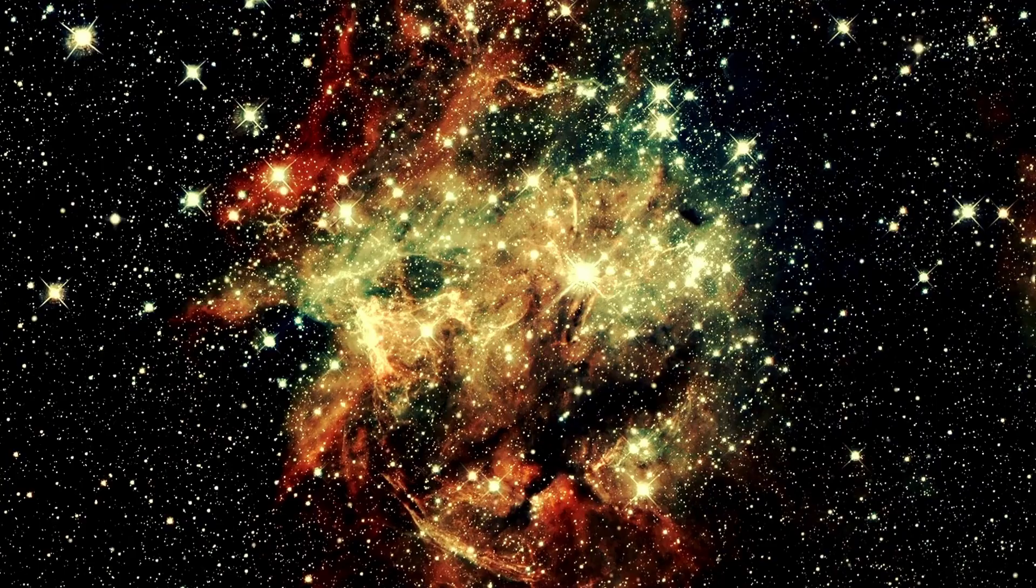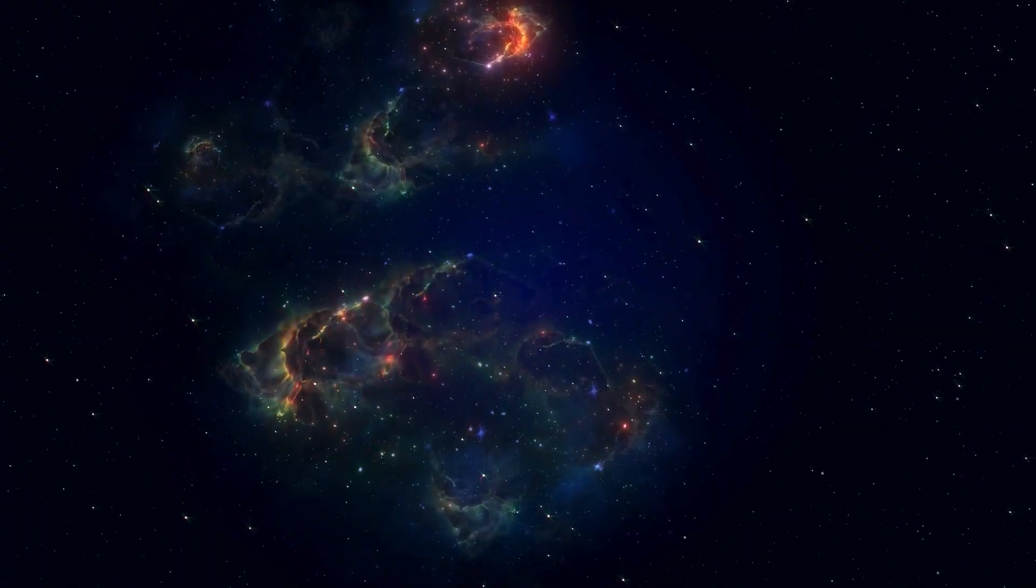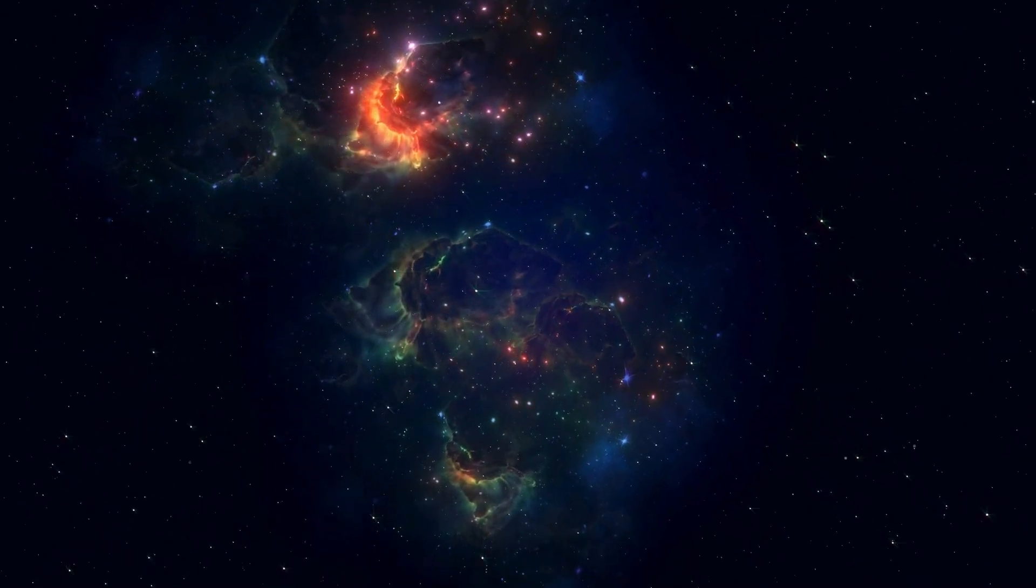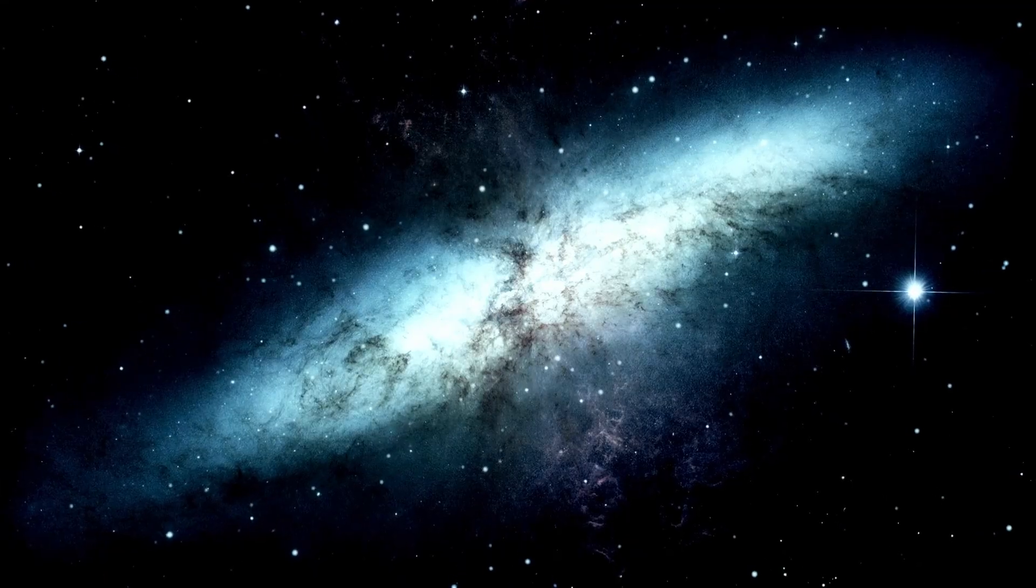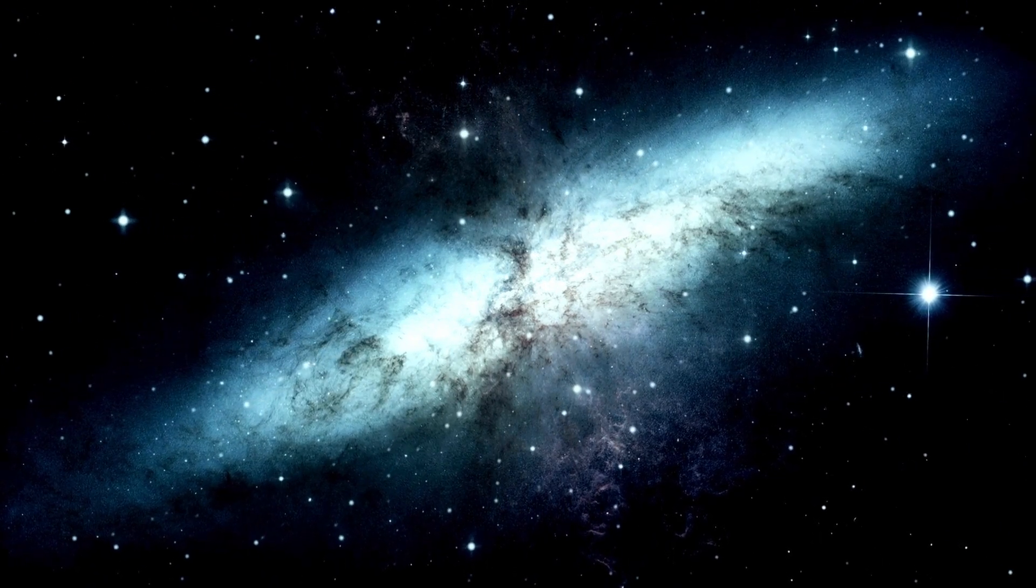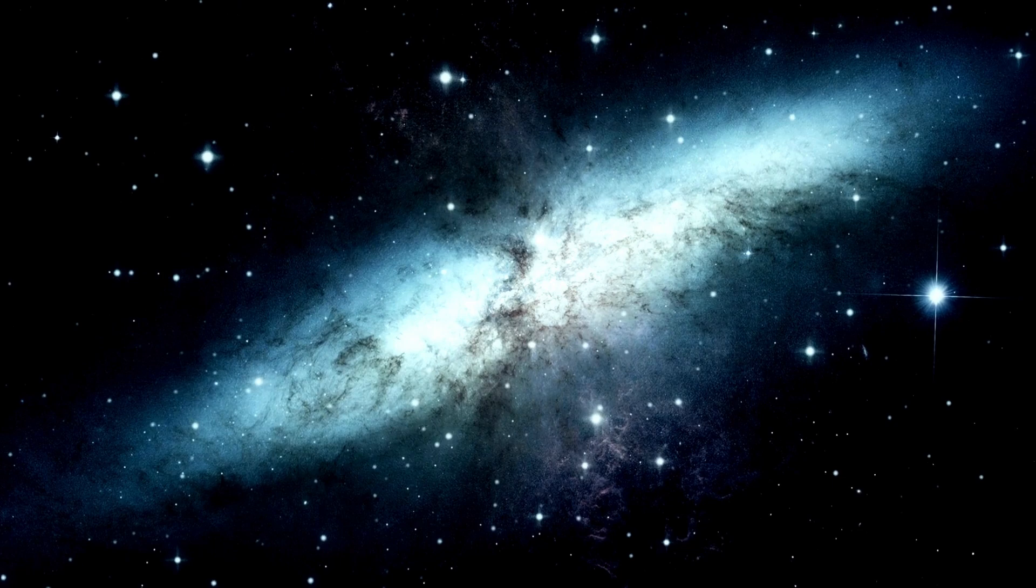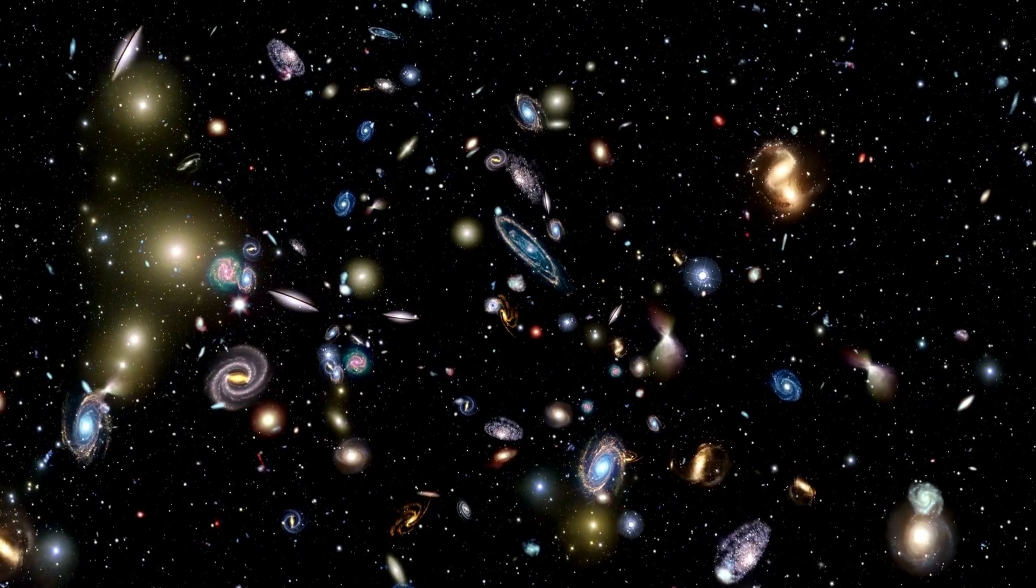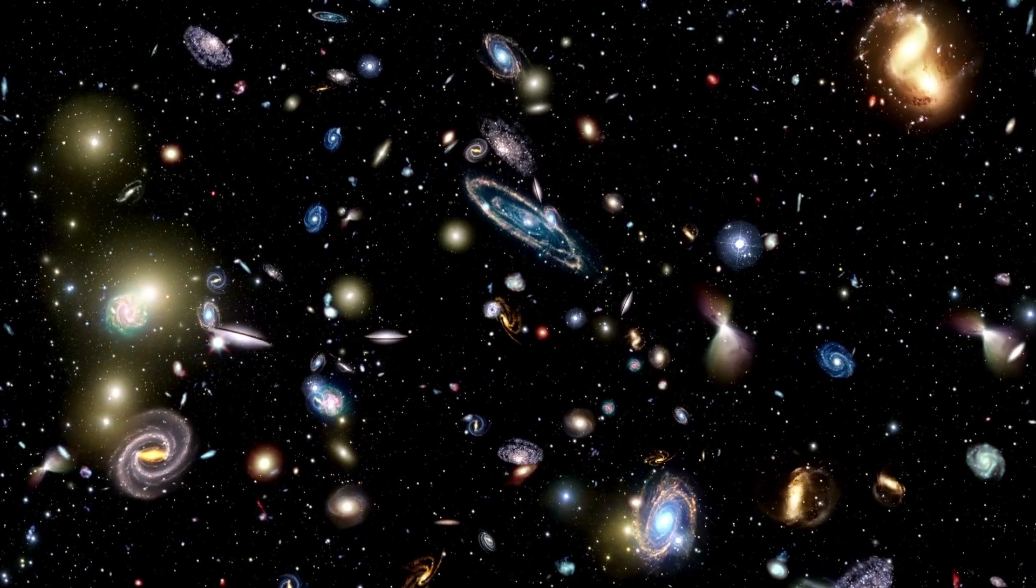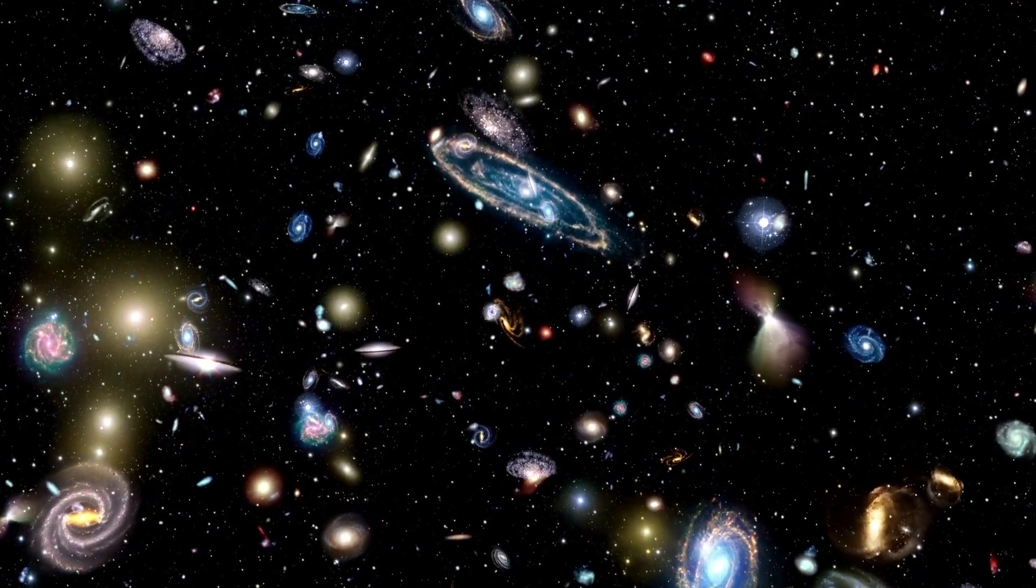This discovery was significant because it provided proof that black holes actually exist and that they were not just a figment of Albert Einstein's wild imagination. While that was great, it also meant that there was this unreal entity in space that we urgently needed to know more about, so researchers all around the world got to work. This black hole was named Cygnus X1 and it is located in the constellation Cygnus about 6,000 light years from Earth.